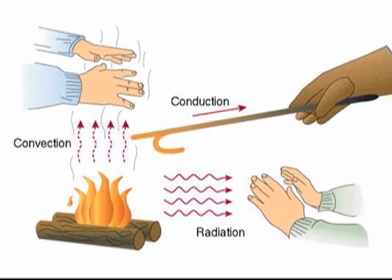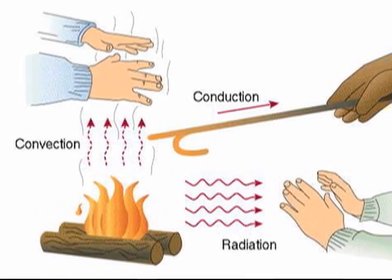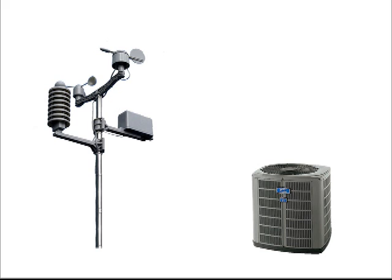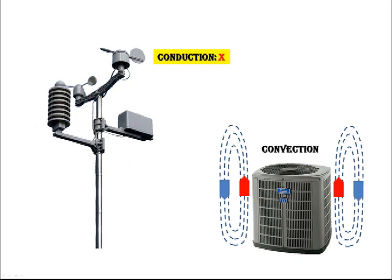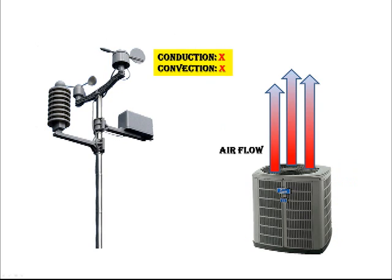Let's look at how the heat would be transferred from the air conditioning unit to the temperature gauge. There are many ways to transfer heat energy from one object to another. First, conduction — but air is a poor conductor, so we can forget that. Convection doesn't work either, unless the unit is immediately below the thermometer, which it isn't. As for airflow, there is a fan in the AC unit, but it blows the air upwards, not sideways, so that is out too.